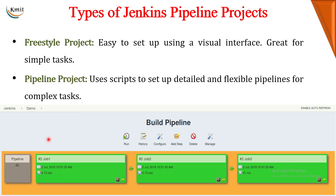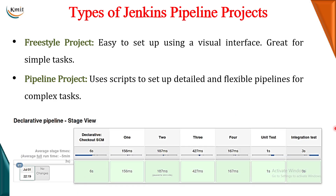This is how your freestyle project pipeline was actually looking like. This is the output of your freestyle project. Now, this is how your pipeline project will look like. When you write a script in a pipeline project and create a pipeline, this is the visual representation of it. You can see there are seven stages here and each stage is doing some task. If all the stages are successfully executed, you get green boxes. If any one of the boxes is red, that means that particular stage was not successfully created.